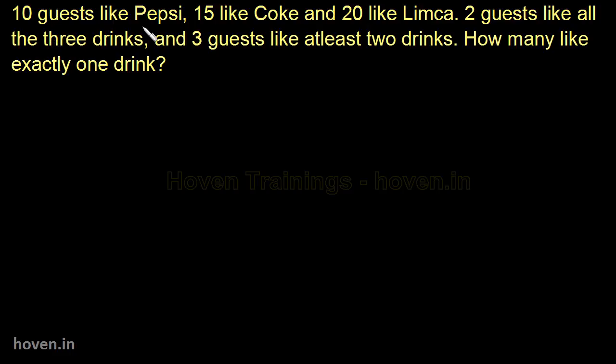10 guests like Pepsi, so we can write P is equal to 10. This is one thing that has been given to us. Then we have been given Coke is 15, C is 15, then Limca is 20. And two guests like all the three drinks, so we have to write P, C and L is equal to 2. So this is what has been given to us.